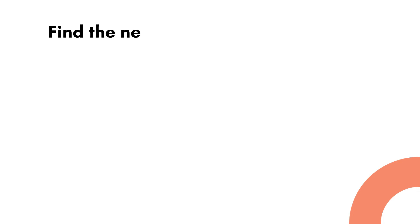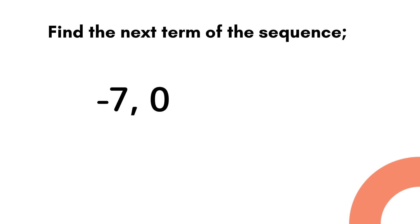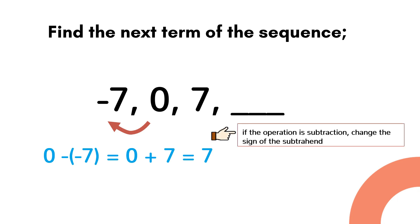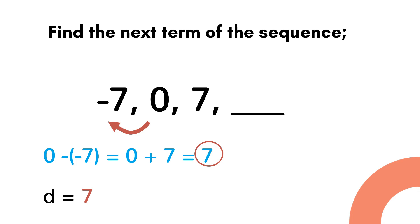Now let's discuss the last example. Find the next term of the sequence: negative 7, 0, 7. We get the common difference — that is 0 minus negative 7 is equal to positive 7. Take note that if the operation is subtraction you have to change the sign of the subtrahend, so the common difference is equal to 7.